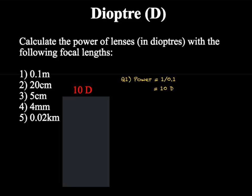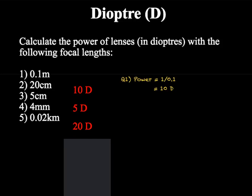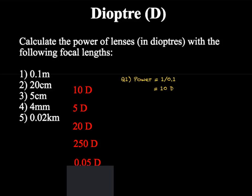You should have got 5 diopters for the second one converting 20 centimetres to 0.2 metres, 20 diopters for the third one again making sure we convert centimetres, conversion of millimetres into metres and an answer of 250D, and then finally a conversion of kilometres into metres giving us 0.05D.